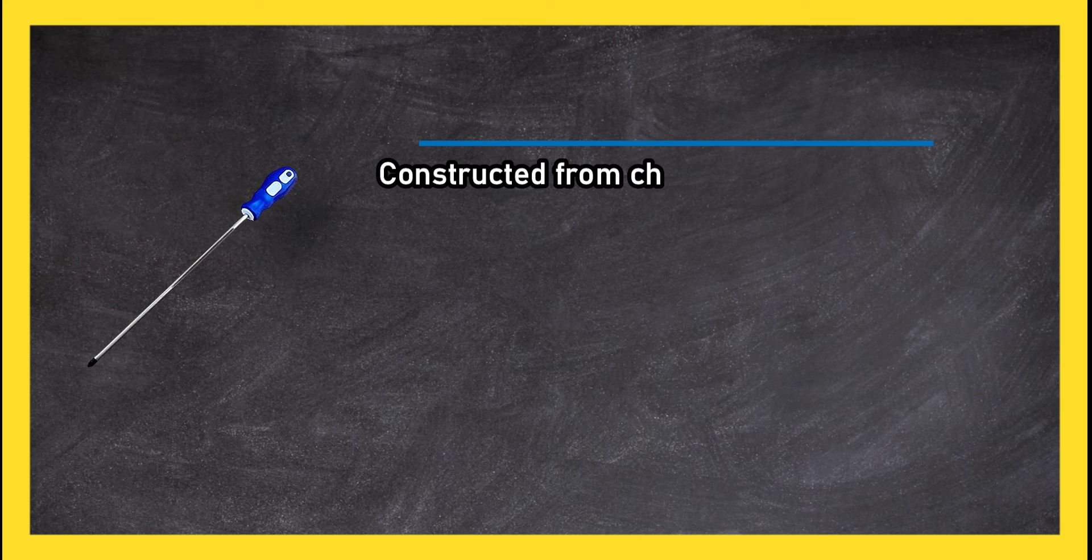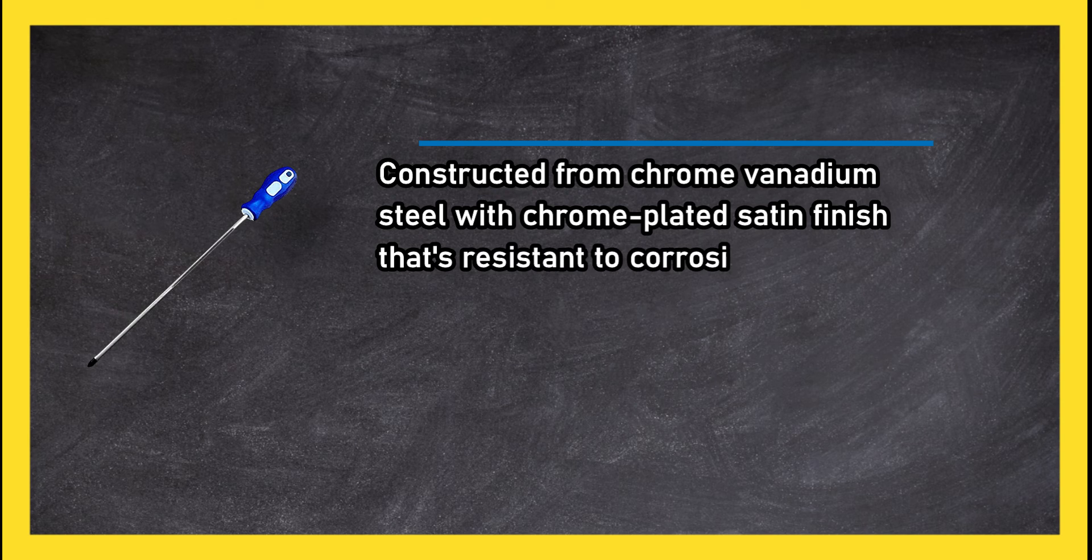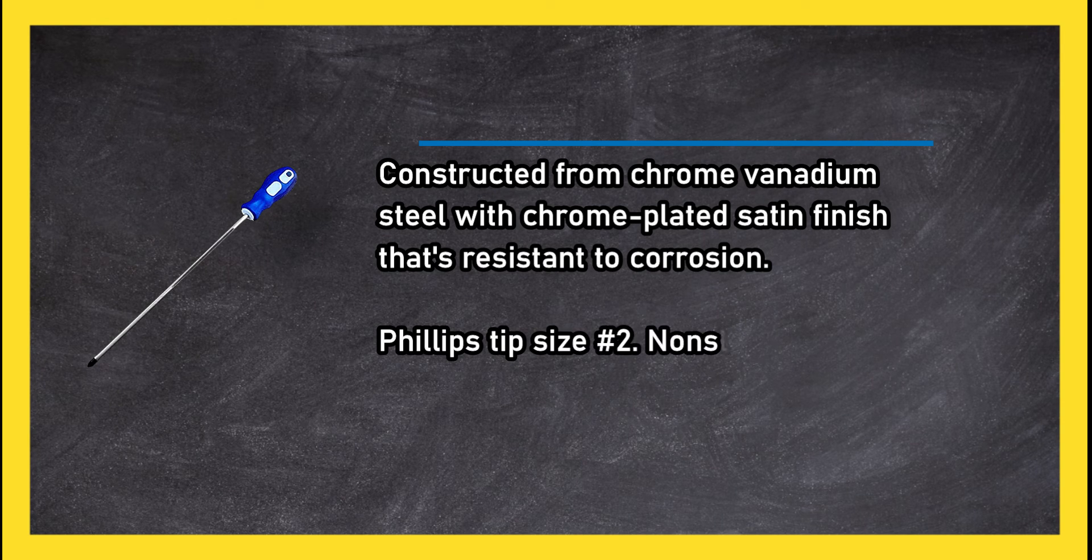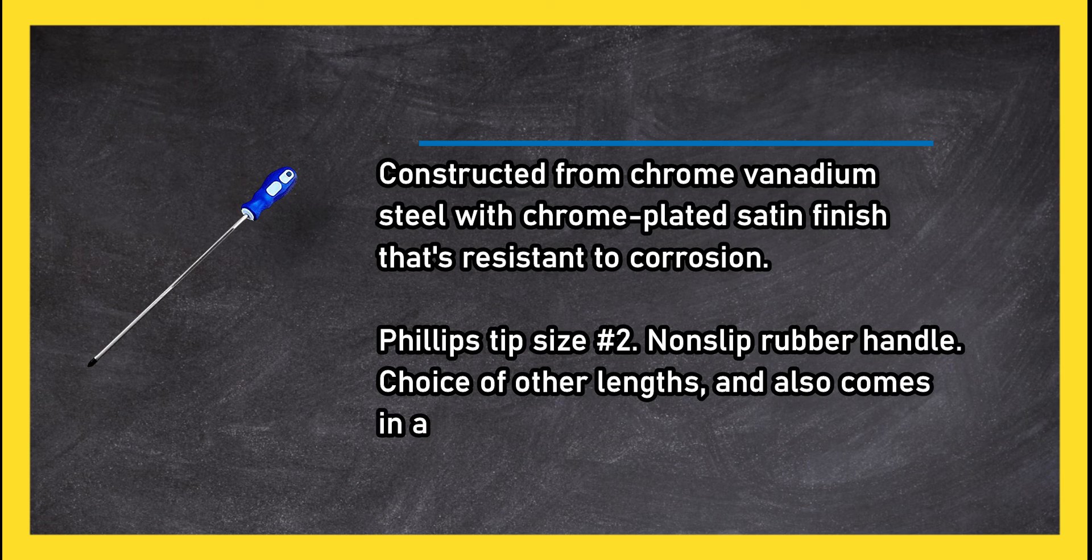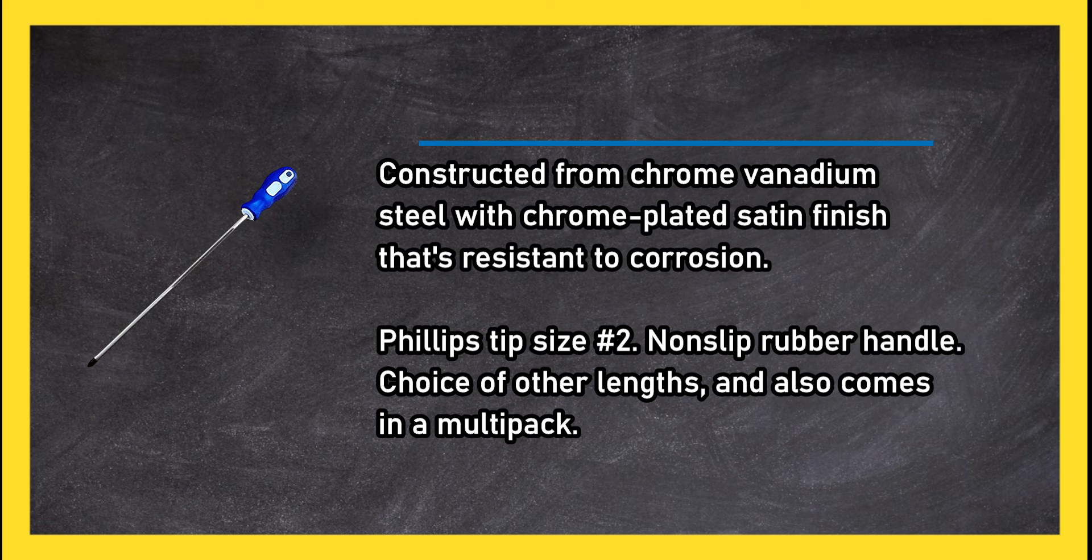Constructed from chrome vanadium steel with chrome plated satin finish that's resistant to corrosion. Phillips tip size number 2. Non-slip rubber handle. Choice of other lengths, and also comes in a multi-pack.